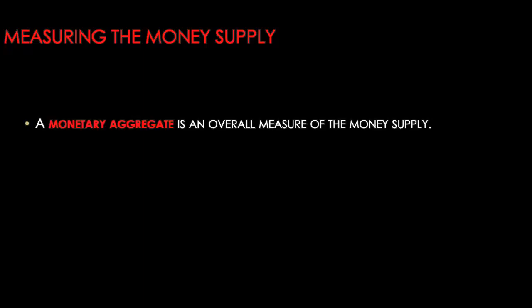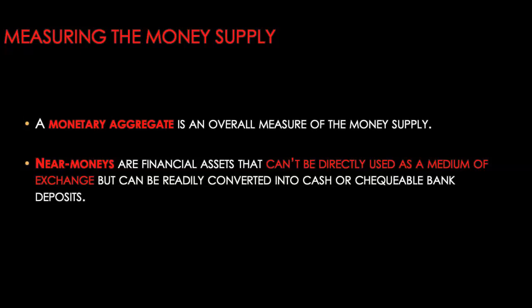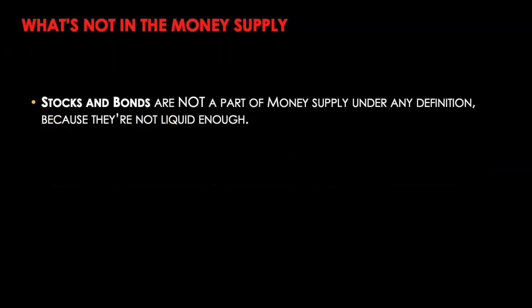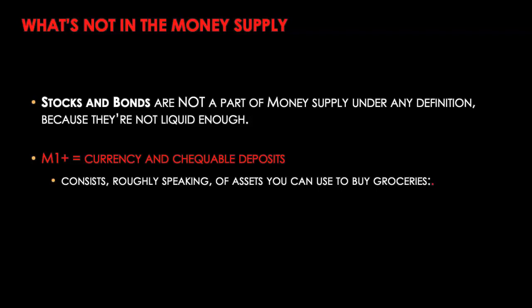Now that we know what assets can be included in money, let's look at how central banks measure the money supply. Central banks use what we call monetary aggregates, which help measure the total stock of money in our economy. Monetary aggregates include not just the most liquid assets like currency and checkable deposits, but also near monies — financial assets that cannot be directly used as a medium of exchange but can be readily converted into cash or a checkable deposit. Examples include savings and fixed-term deposits, or money market mutual funds. Stocks and bonds are never part of money supply as their transaction costs of conversion are too high.